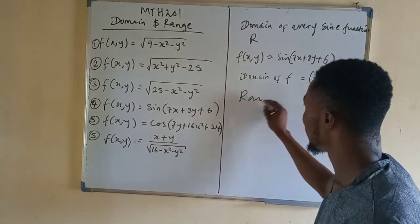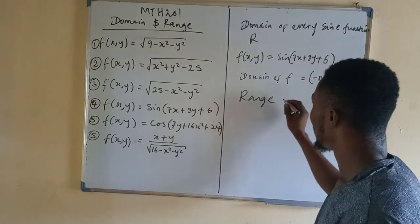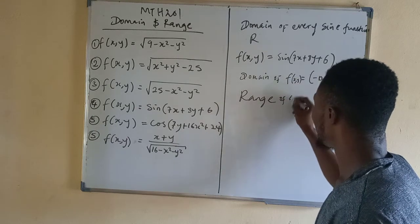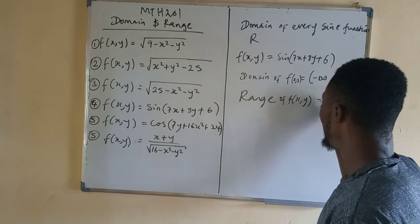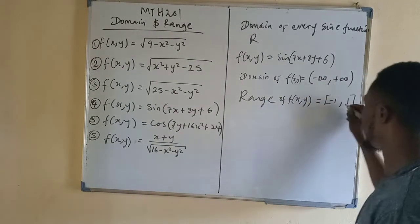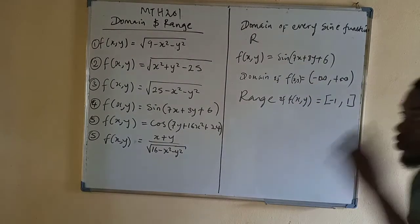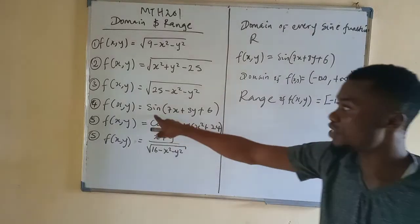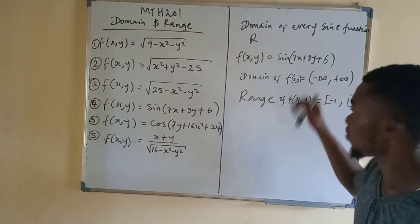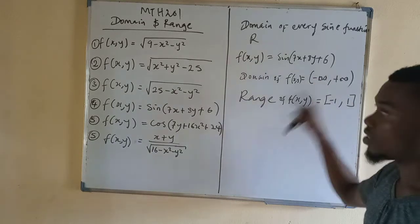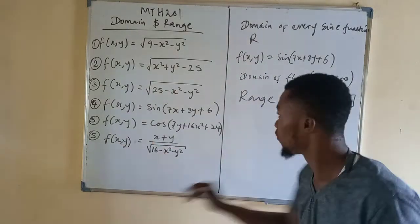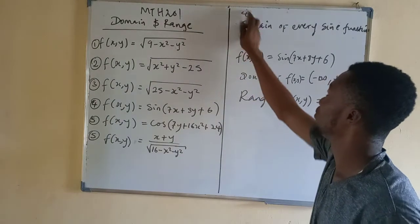Now the range of f(x,y) is what? It ranges from minus 1 to 1. So for every sin function, if you have sin of anything, the domain is all real numbers. Now the range is from minus 1 to 1. So let us solve number 5. Number 5 — this was for number 4.